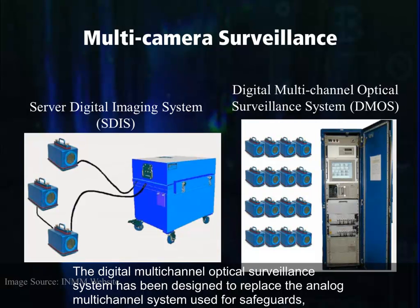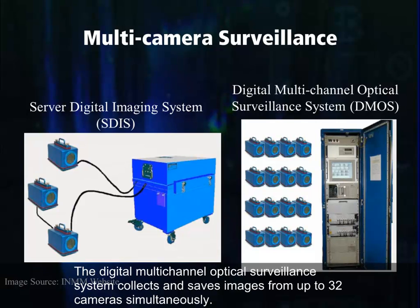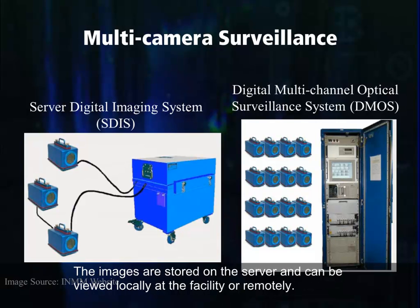The Digital Multi-Channel Optical Surveillance System has been designed to replace the analog multi-channel system used for safeguards, bringing digital processing capabilities to analog systems currently in use. The Digital Multi-Channel Optical Surveillance System collects and saves images from up to 32 cameras simultaneously. The images are stored on the server and can be viewed locally at the facility or remotely.